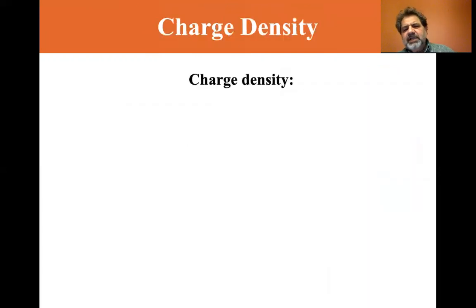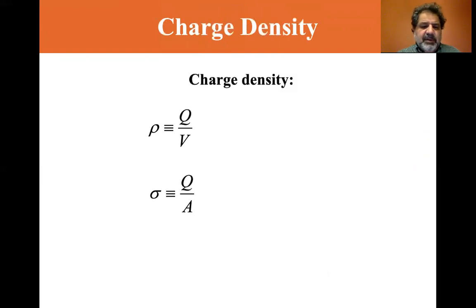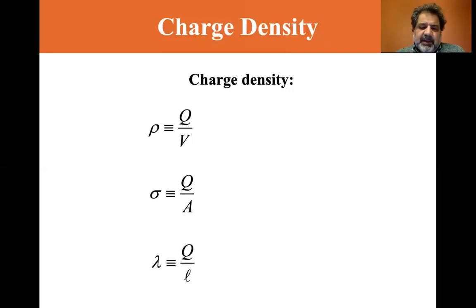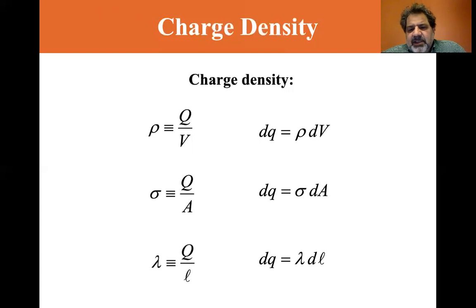There's a charge density for each geometry. For a volume, the charge density is rho — Q divided by the volume. For a surface area, it's sigma — Q divided by the area. And for a line, it's lambda over L. So for the volume, dQ equals rho dV; for the surface, dQ equals sigma dA; and for the linear case, dQ equals lambda times dL. That's your charge density.